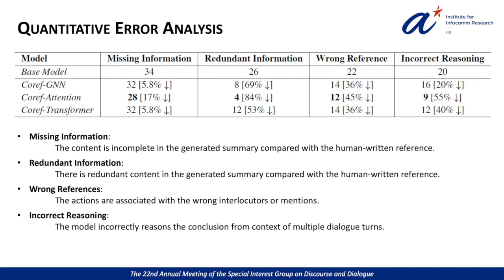The coreference-guided transformer and the GNN-based model relatively reduced incorrect reasoning by 40% and 20% compared with the base model. And encoding coreference information by an additional attention layer substantially improves the reasoning capability by reducing 55% relatively.